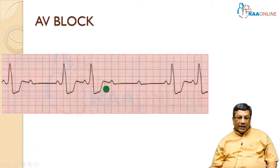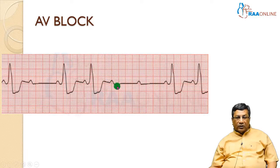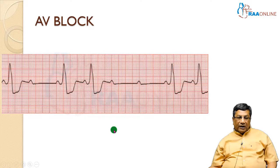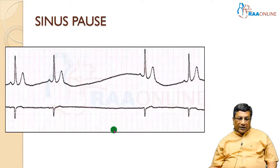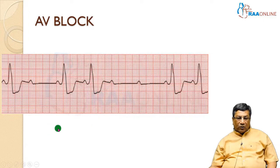Whereas inside the pause, if you find P waves and those P waves are not followed by QRS complexes, it is atrioventricular block. This means the sinus node has formed the impulse and atrial depolarization has happened, but this depolarization cannot cross through the AV node and the distal conduction system to produce ventricular depolarization. So whenever you have a pause: no P wave inside the pause means sinus pause; P wave with no conduction to the ventricle means atrioventricular block.